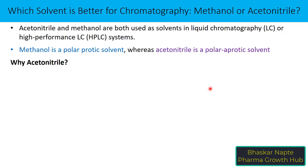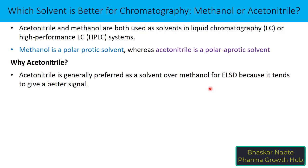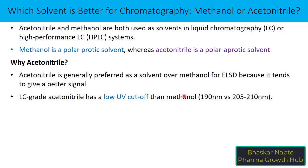Now let's understand why acetonitrile can be preferred over methanol. First, acetonitrile is generally preferred over methanol for ELSD (evaporative light scattering detection) because it tends to give a better signal. Second, LC-grade acetonitrile has a lower UV cutoff than methanol, so it is always preferred to use a low UV cutoff solvent to minimize noise and increase sensitivity, especially when detecting compounds at low UV wavelengths like 200 or 210 nanometers — in that case, acetonitrile must be preferred over methanol.